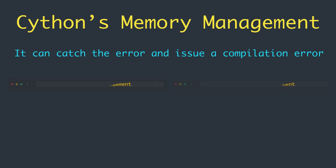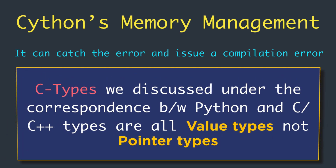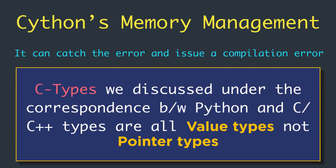The other C types mentioned in the previous video — while talking about the type correspondence between built-in Python types and C or C++ types — are all value types, not pointers. For those types, the Python data is copied during the assignment, enabling the C variable to evolve separately from the Python object used to initialize it.